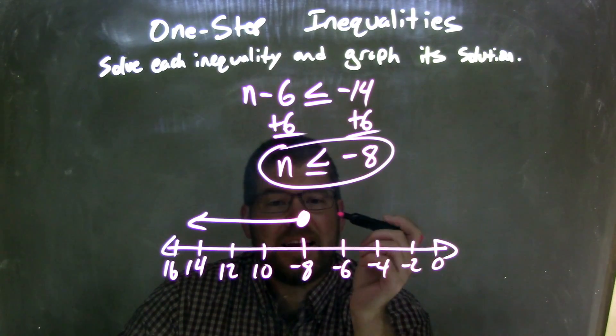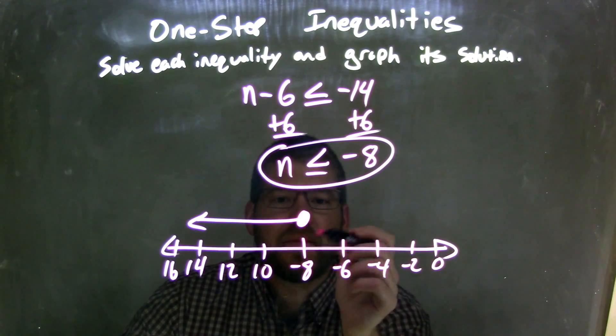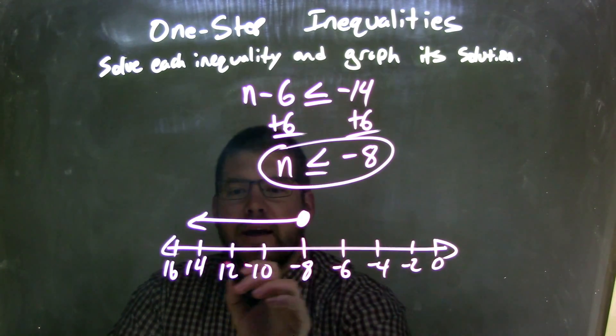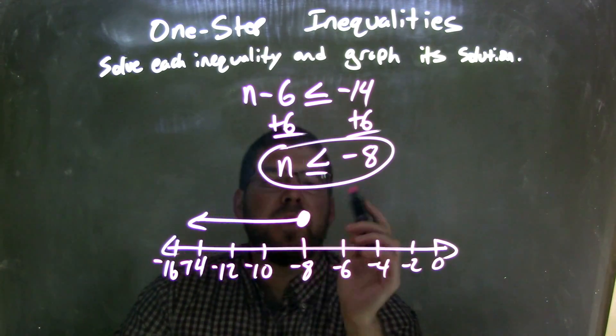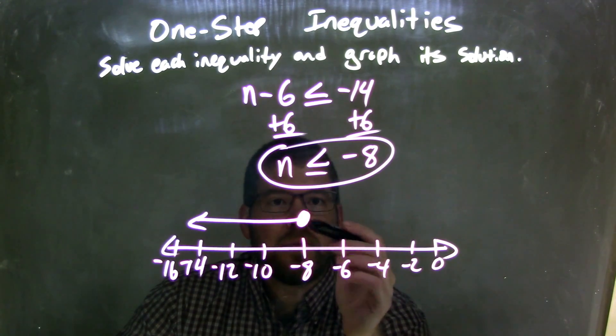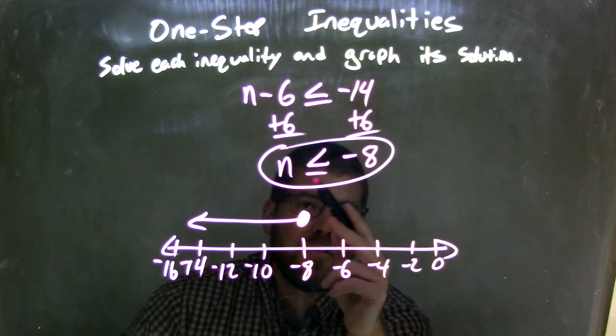From there, I'm going to graph that, so I have a number line here. I'm going by 2's. Oh, negatives, I forgot that. So we have negative 8 here. That's what we start with. It's a closed circle because of the equal to sign.